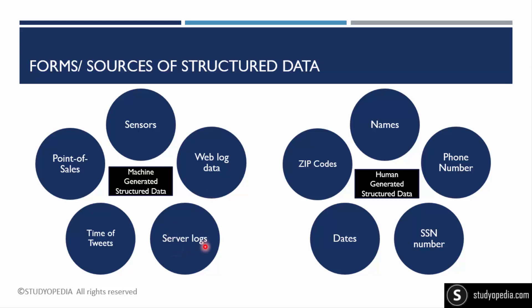Server logs can also be considered structured as well as unstructured. The timestamp values — at what time a log entry was generated — come under structured data and can be saved in rows and columns. Similarly, the time of tweets is machine-generated and comes under structured data, and the same goes for server log timestamps, which are generated by servers and systems.